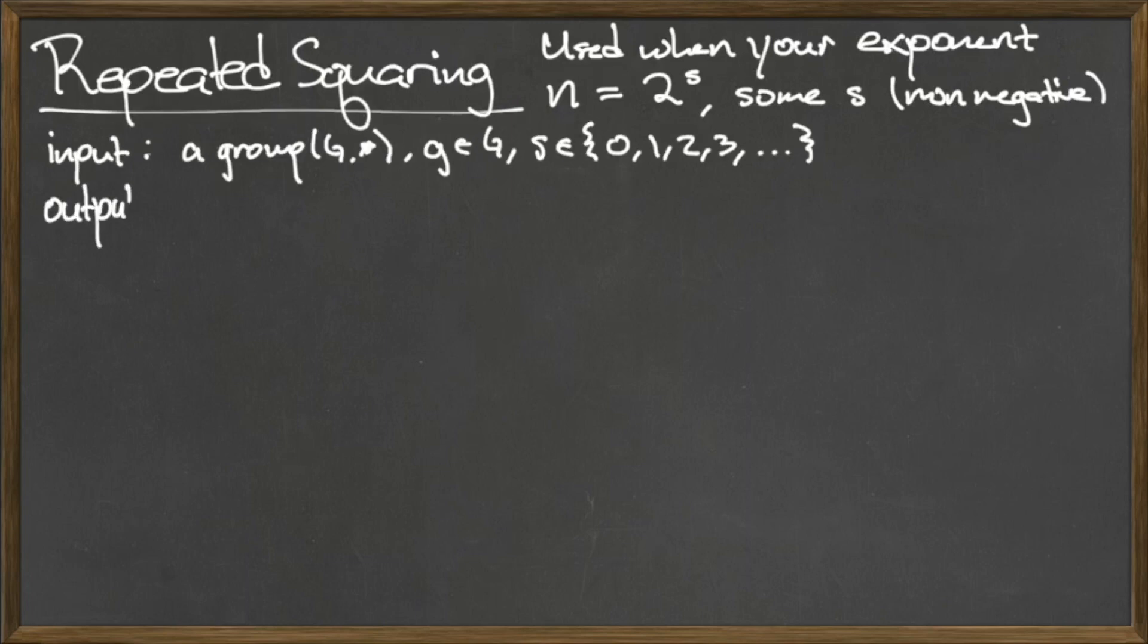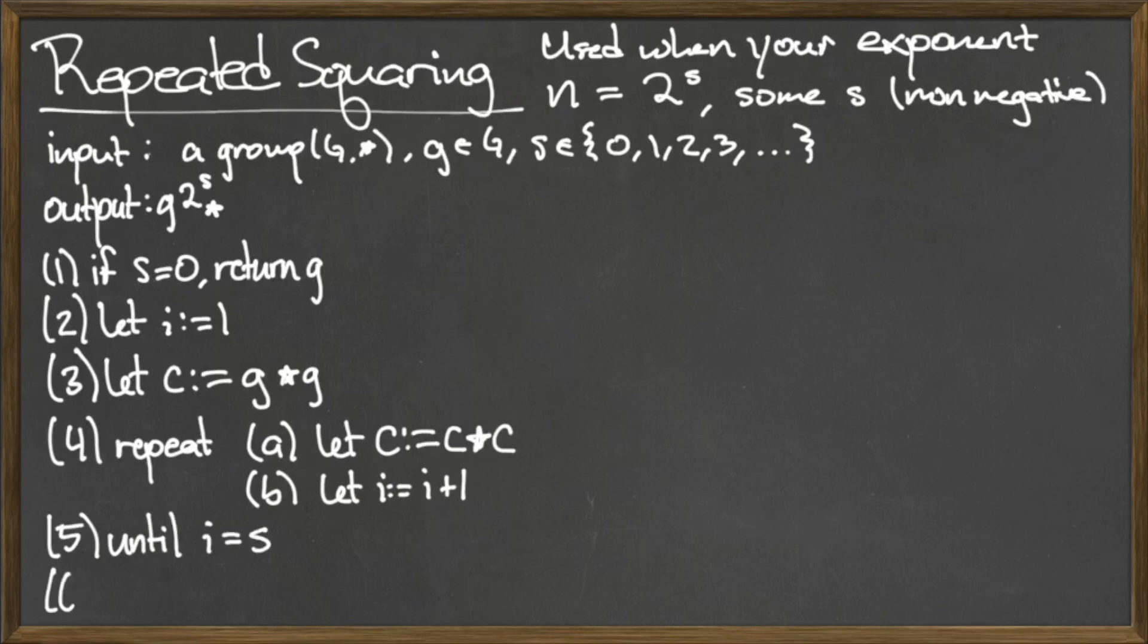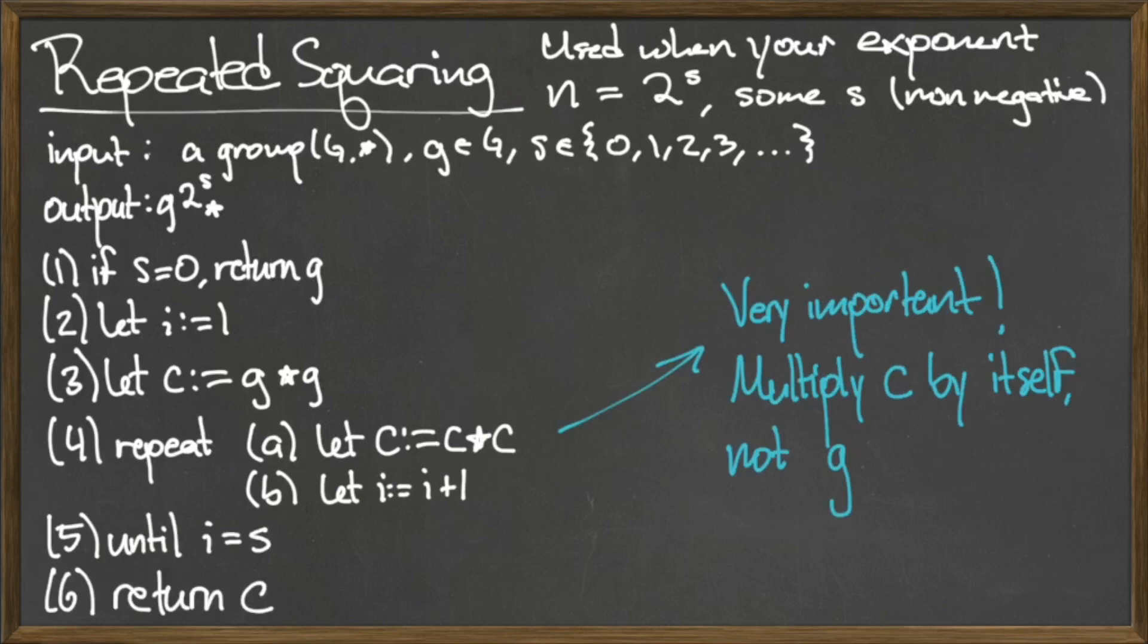The repeated squaring algorithm accepts as input a group G under a binary operation star, an element little g in the group capital G, and a non-negative integer s, and outputs g to the 2 to the s star.